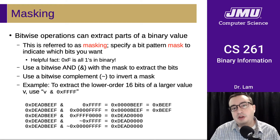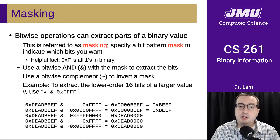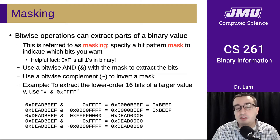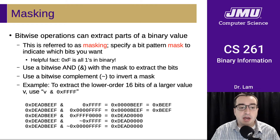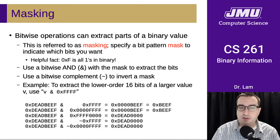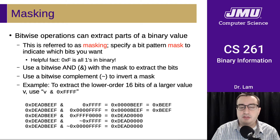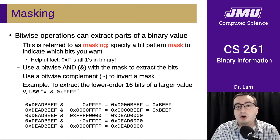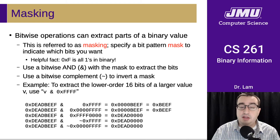The last bitwise operation we're going to talk about today is masking. This is not a separate operation — it's just ANDing with a particular bit pattern. This is useful because it allows us to extract parts of a binary value. Maybe we only care about a particular subset of the bits and want to set all the other bits to zero so we can focus on the bits we care about. The bit pattern used with the AND is called the mask, and you just AND with the mask to get the bits that you want.